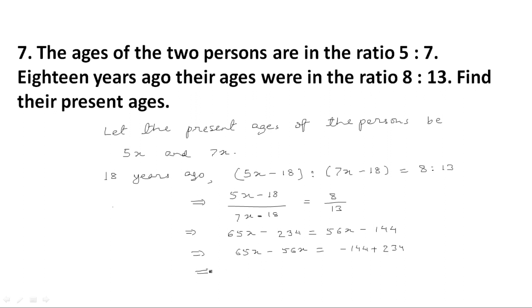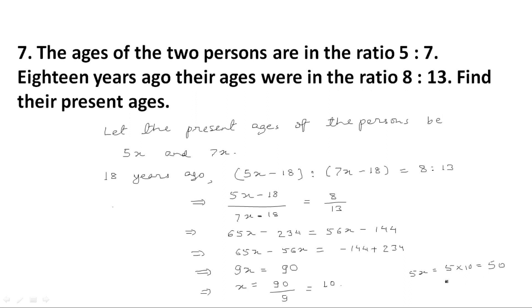This implies 65x minus 56x is equal to 234 minus 144, which gives 9x equal to 90. This implies x is equal to 90 upon 9, which is equal to 10. Now the present age of the first person is 5x, which is 5 multiplied by 10, equal to 50. The present age of the second person is 7x, which is 7 multiplied by 10, equal to 70 years.